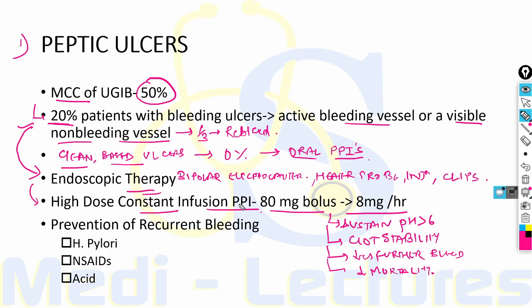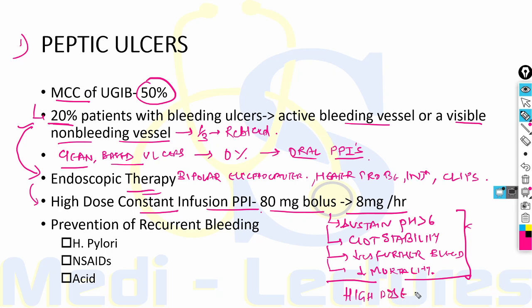High-dose constant infusion of PPI should be given after every case of endoscopic therapy, for up to 3 to 7 days. An alternative to this infusion is high-dose intermittent PPIs given in twice-daily or three-times-daily doses instead of continuous infusion.